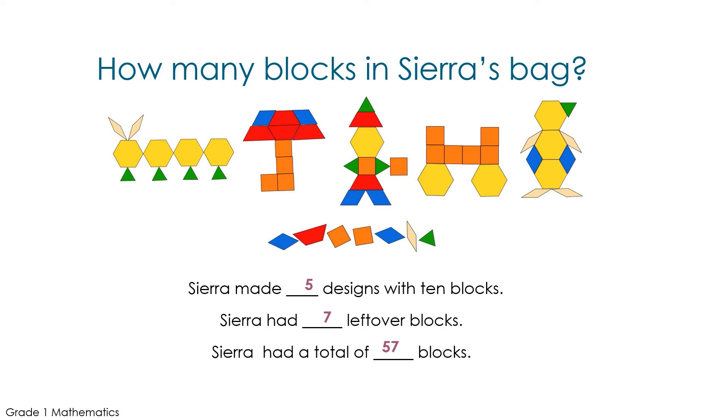Seven blocks. Let's check our math by counting by tens and ones. 10, 20, 30, 40, 50, 51, 52, 53, 54, 55, 56, 57. Sierra had a total of 57 blocks.